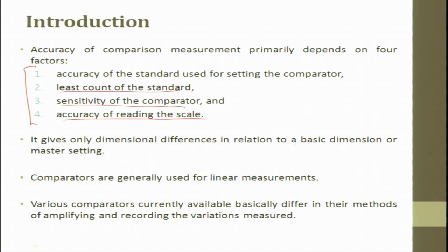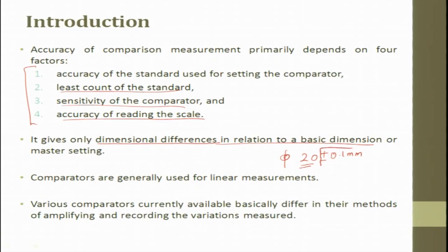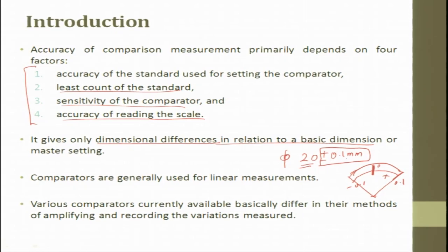A comparator gives only dimensional difference in relation to the basic dimension or master. For example, if you have 20 ±0.1 mm diameter to be measured, why always measure the 20? We measure only the tolerance deviation alone. You can have a dial gauge with a zero center, positive 0.1 on one side and negative 0.1 on the other — all you have to do is measure that deviation. It gives only the dimensional difference in relation to the basic size. Comparators are generally used for linear measurement.